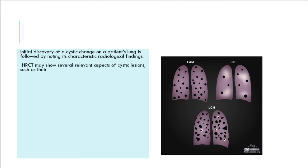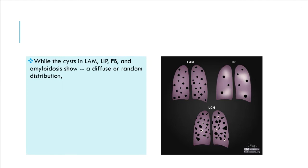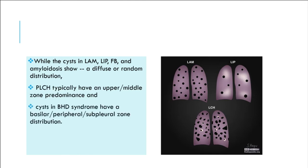HRCT may show several relevant aspects of cystic lesions, such as their distribution — diffuse, random, or confined to a specific region — and their size and shape: round, bizarre, or lentiform. While cysts in LAM, LIP, follicular bronchiolitis, and amyloidosis show a diffuse or random distribution, PLCH typically has upper-to-middle zone predominance, and cysts in BHD syndrome have a basilar/peripheral/subpleural zone distribution.